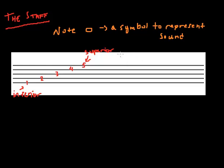The spaces are also counted in the same manner, so you also have one, two, three, four spaces. It can therefore be stated that a staff is composed of five lines and four spaces.